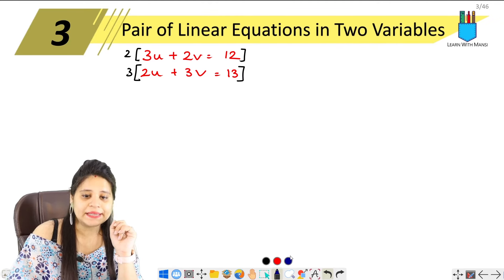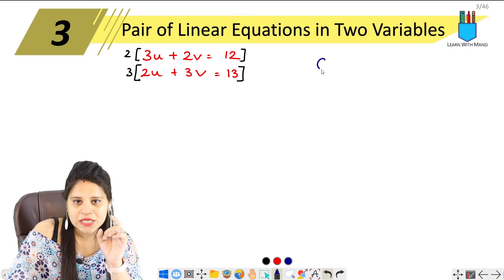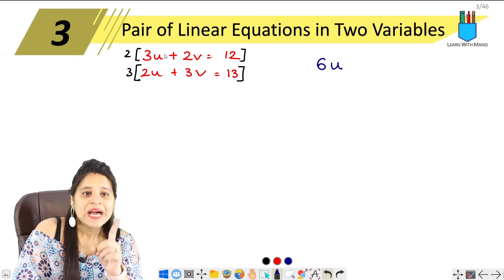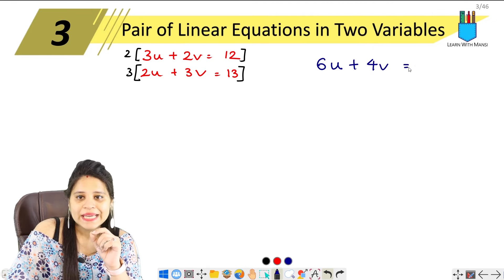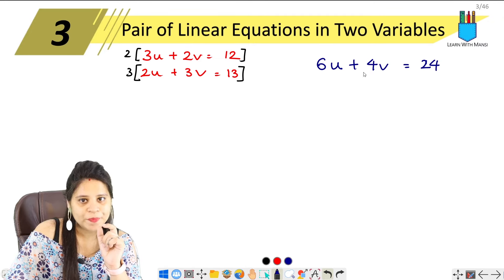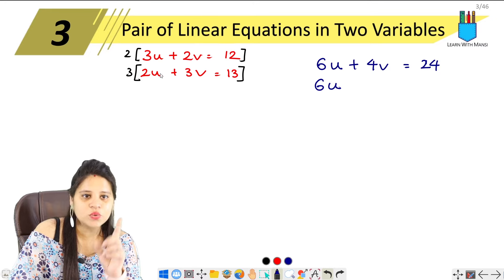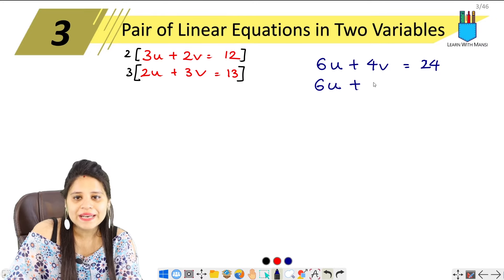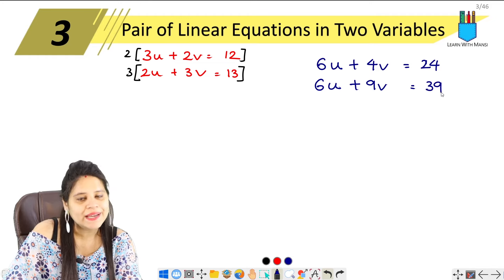So, let's see here. Now, what are the final equations? We have 3 into 2. 2, 3s are 6u. Again, 2, 2s are 4. So, plus 4v equals to 12 into 2, 24. Next, 3 to 2 is 6u, 3 to 3 is 9v. And, 13 to 3 is 39.